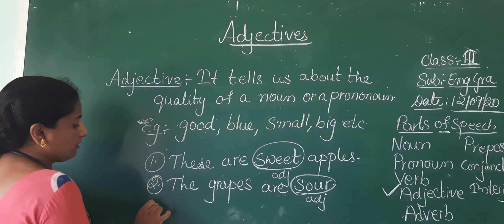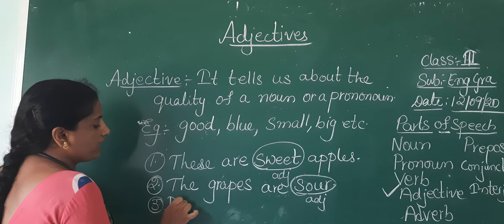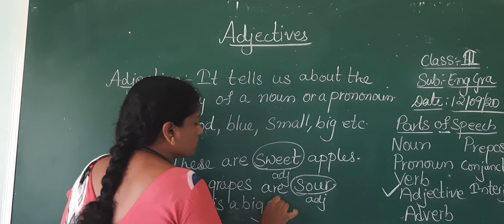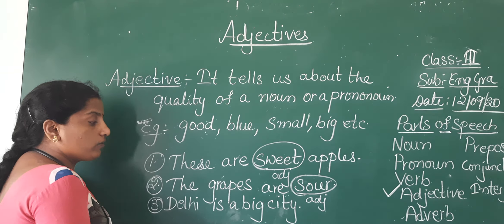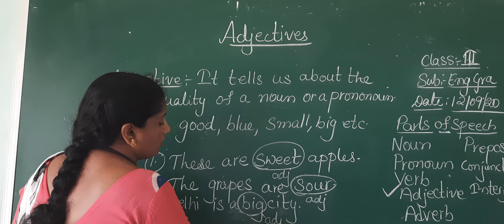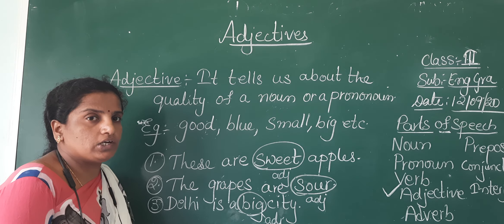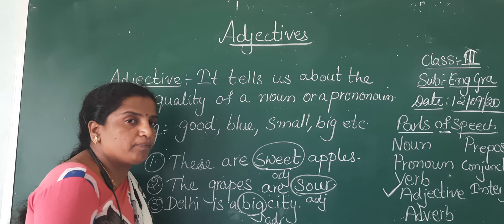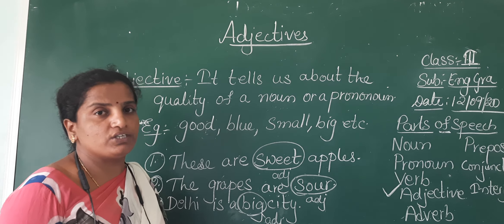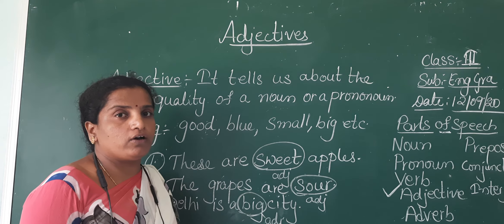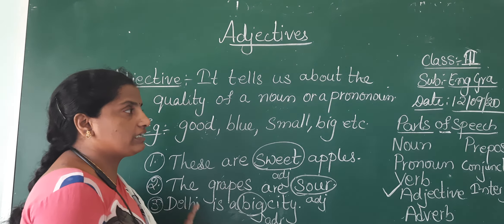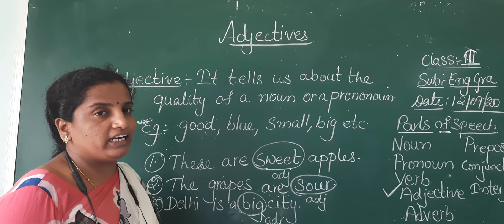Third example: 'Delhi is a big city.' Here, 'Delhi' is the noun and 'big' tells us about the quality of Delhi, so 'big' is an adjective. So an adjective is a word which explains or tells us about the noun, or the quality of a noun, and is known as an adjective. Follow the lesson. Okay, bye.